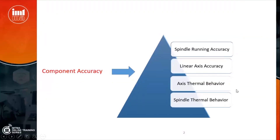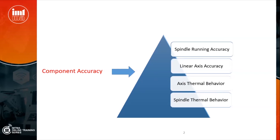If you are not getting good component accuracy, it could be due to several issues. If spindle running accuracy is poor, you will not get good circularity or surface finish — you need to improve spindle build quality, change bearings, and do condition monitoring regularly. If linear axis positioning accuracy or squareness is not good, that also affects component accuracy. If you get good finish in the morning but not in the evening, that is a thermal behavior issue. All machines have a warm-up program, but most users do not use it — the purpose of the warm-up program will be covered in upcoming slides.